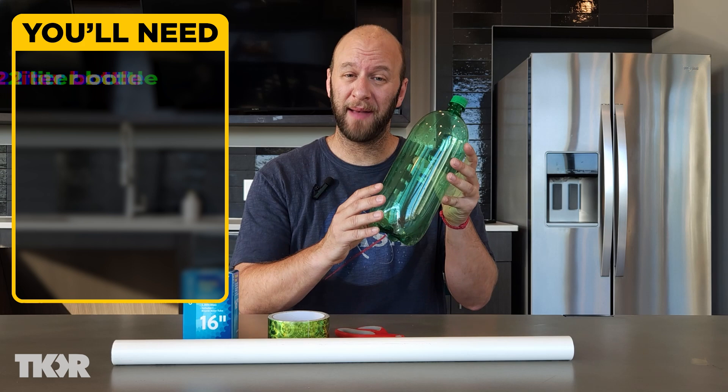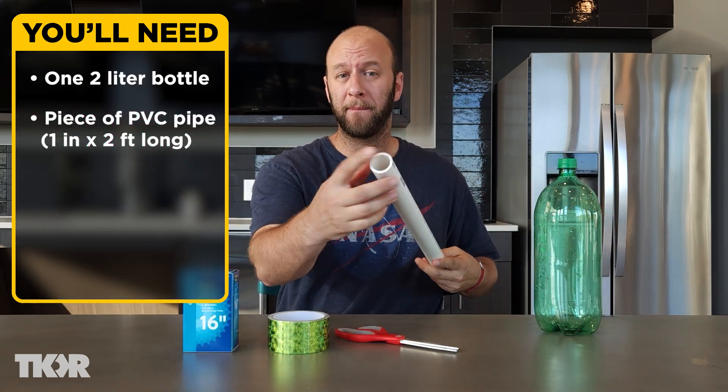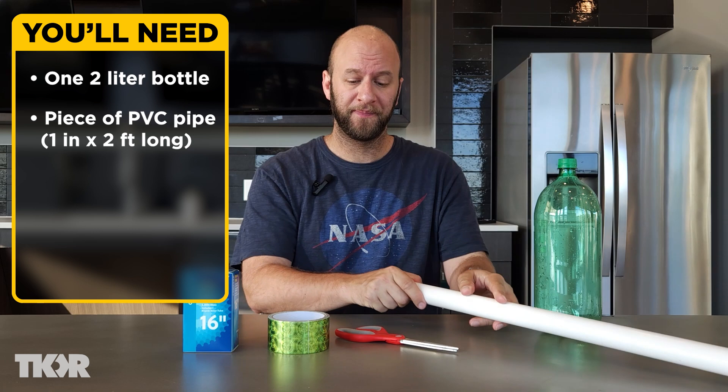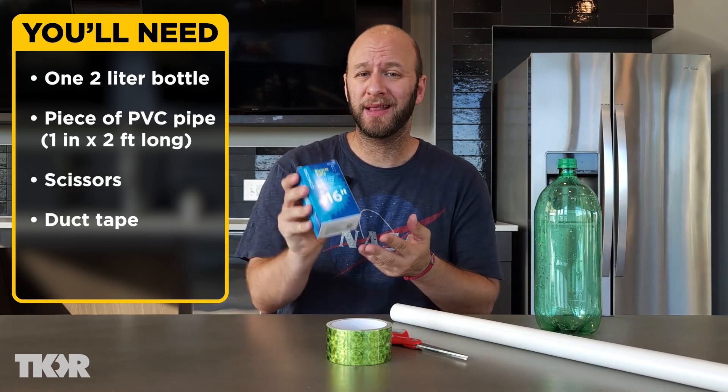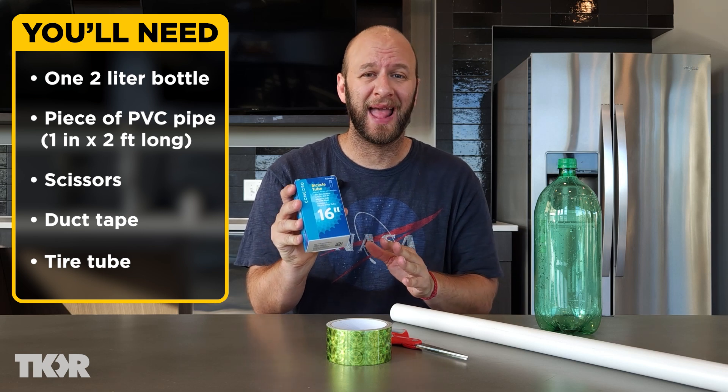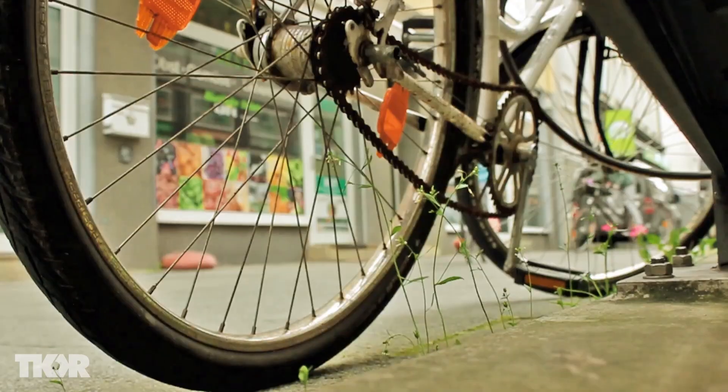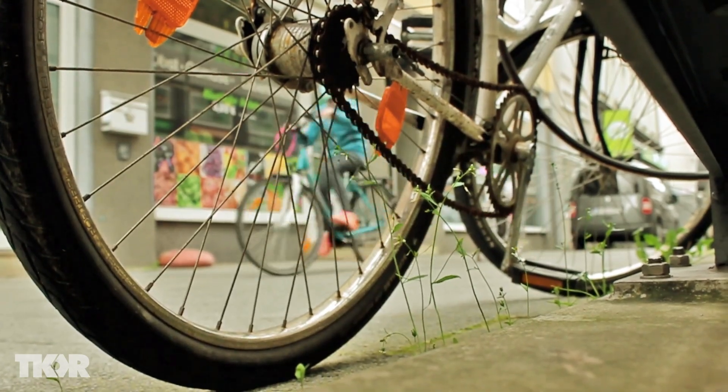To build your launcher, you're going to need the following supplies: one empty two liter bottle, a piece of PVC pipe (mine is one inch by two feet long), scissors, handy dandy duct tape, and tire tube. You can get this anywhere they sell bikes and the length doesn't matter since we're only going to be using a little bit.